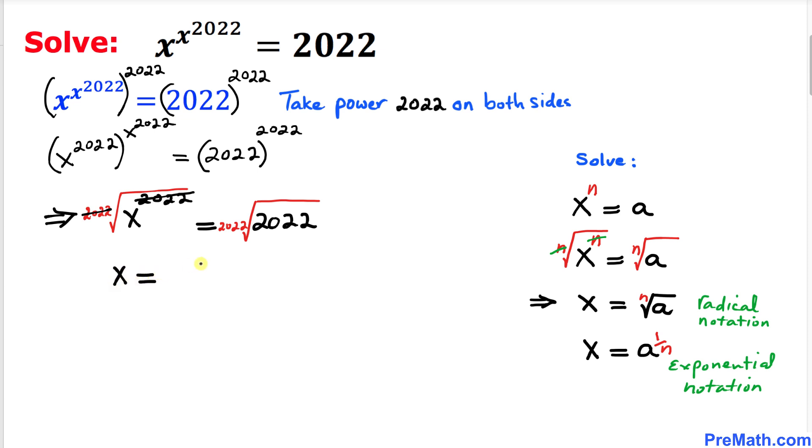So it's going to be 2022, and this is called our radical notation.